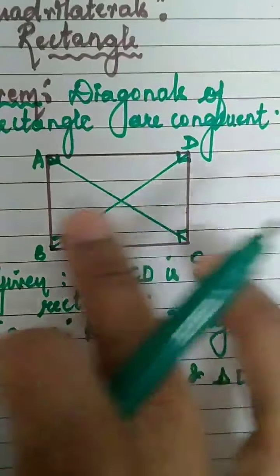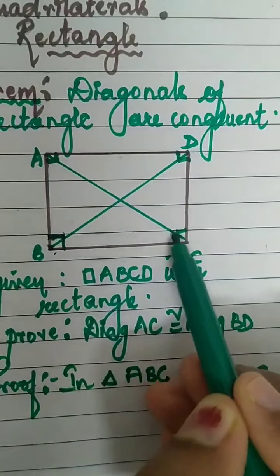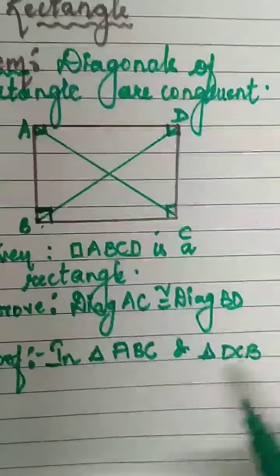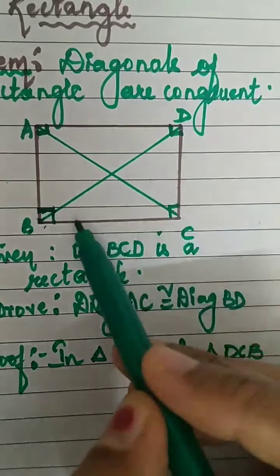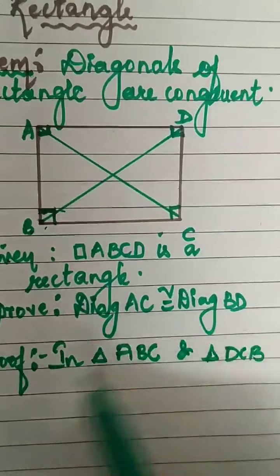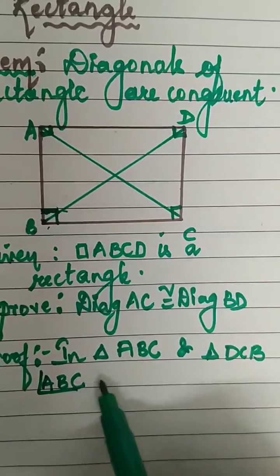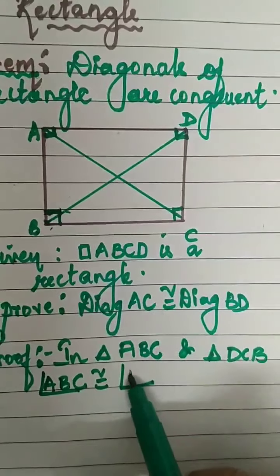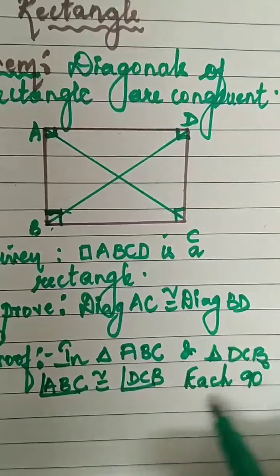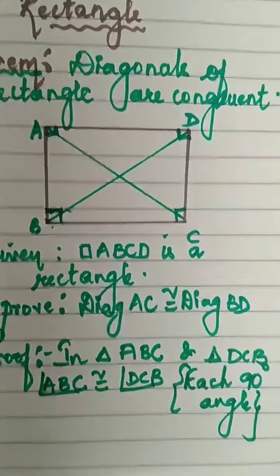One thing is very clear: angle ABC is congruent to angle DCB, each 90 degrees, because all angles of a rectangle are 90 degrees.